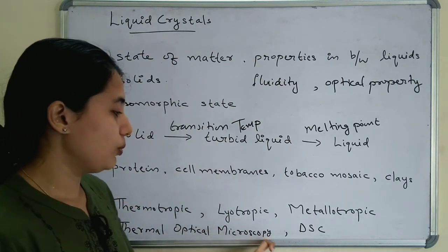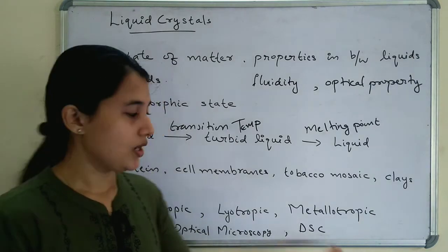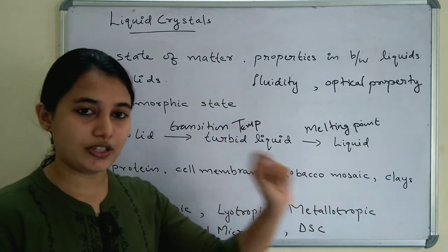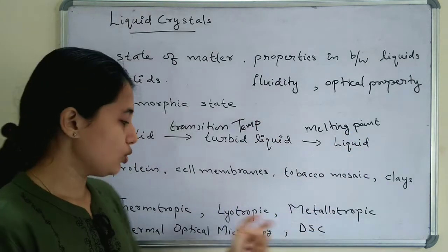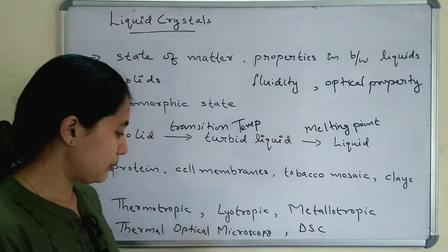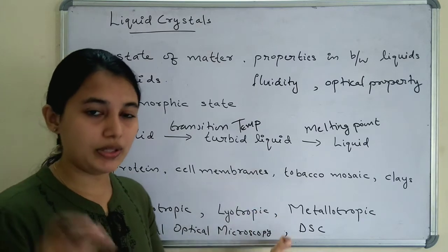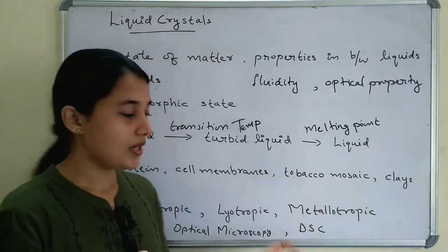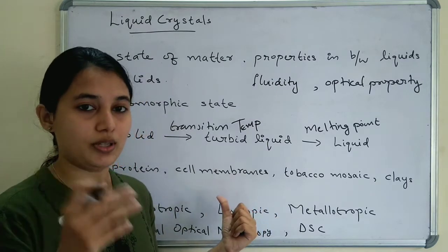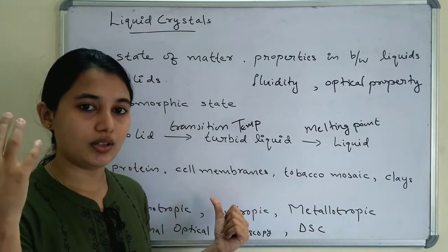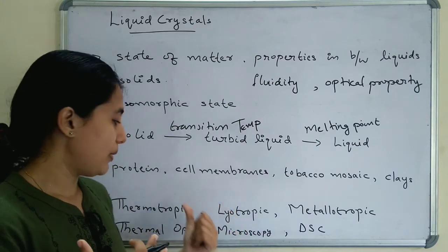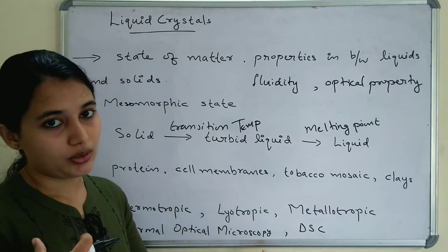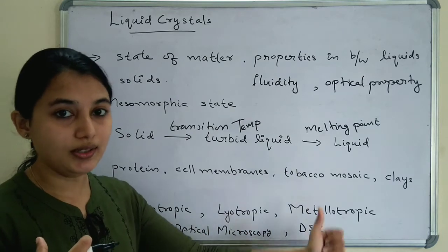Thermal optical microscopy and DSC — differential scanning calorimetry — are the two techniques used to determine the thermotropic liquid crystal state. These are the measuring parameters used to measure the thermotropic liquid state.